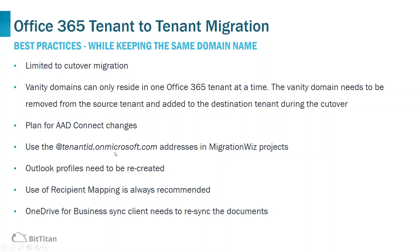The users should first be added to the MSP Complete platform using the vanity domain and a user migration bundle applied to each user. However, before beginning the migration, user addresses should be changed to use the Microsoft onmicrosoft.com domain names at both source and destination rather than the vanity domain names. This prevents major disruption when the vanity domain is removed. A new Outlook profile needs to be created since the destination will have new mailboxes. The OneDrive for Business sync client will also need to re-sync all documents.